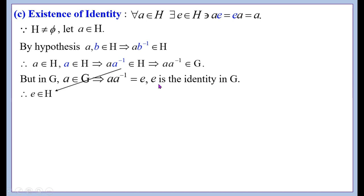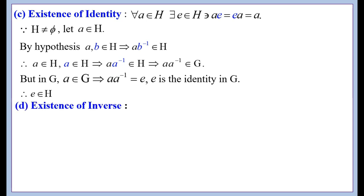Therefore, we can now write e ∈ H, because a·a⁻¹ = e and a·a⁻¹ ∈ H means e ∈ H. Thus, we have proved that the identity element exists in H, and this identity is the same as the identity in G.